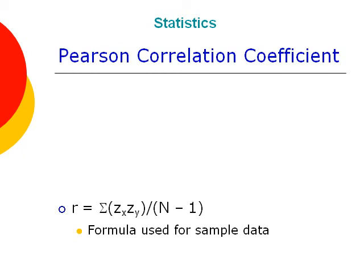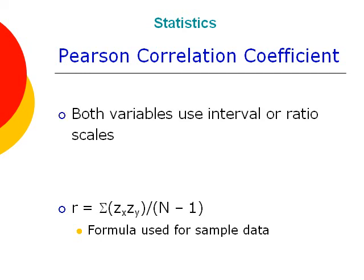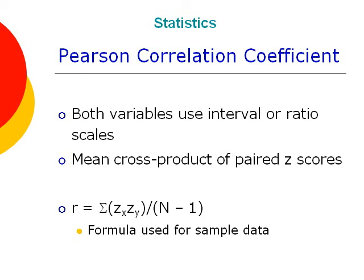The most important correlation coefficient is the Pearson correlation coefficient, and it is used to measure correlation when both of the variables are measured using interval or ratio scales of measure. The Pearson correlation is the mean, or the average, of the cross product of paired z-scores, and that is what is indicated in the formula on the slide.